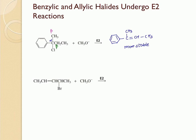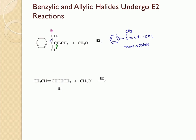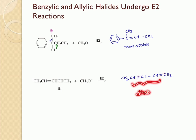Likewise, allylic halides can also undergo E2 elimination reactions. Here is the product that is formed, where you can see that these two double bonds are in conjugation with respect to each other, and therefore this is a stable product.